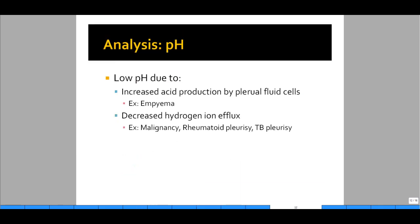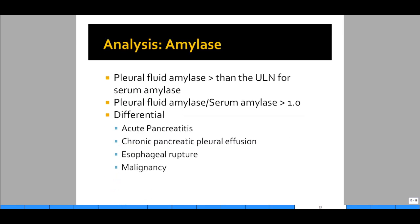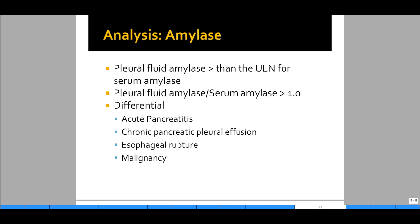Let's look at pH to narrow our differential. Low pH is due to either acid production or decreased efflux of hydrogen ions from the pleural space. Increased acid production suggests empyema; decreased hydrogen ion efflux suggests malignancy, rheumatoid pleurisy, or TB pleurisy, because these conditions alter the pleural tissue preventing hydrogen ions from escaping. Regarding amylase: pleural fluid amylase greater than the upper limit of normal for serum amylase, or a pleural fluid to serum amylase ratio greater than 1, narrows the differential to: (1) acute pancreatitis, (2) chronic pancreatic pleural effusions, (3) esophageal rupture, and (4) malignancies.